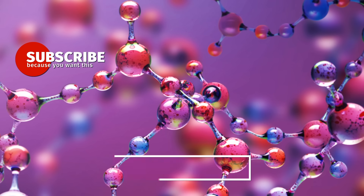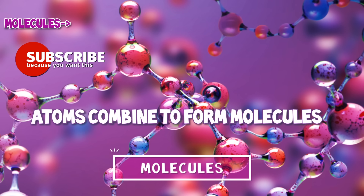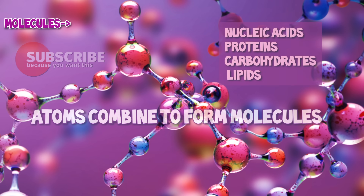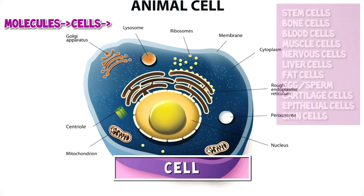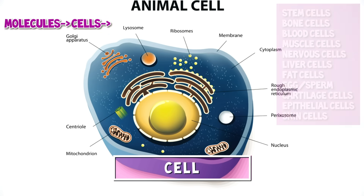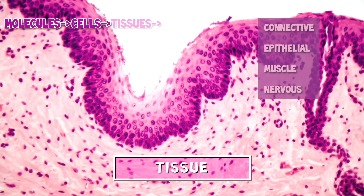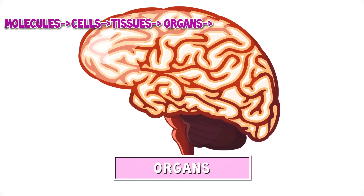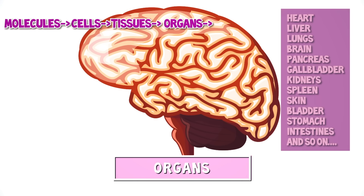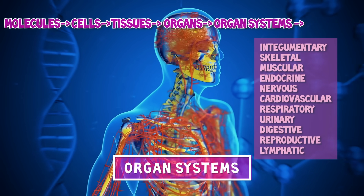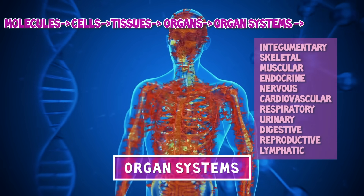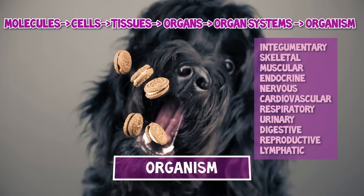The levels of structural organization go from smallest to largest. We start with chemical — atoms will form into molecules. Next level is cellular; the cells are created by those molecules. Next level is tissue, which consists of similar types of cells working together. Then we have organ, which is made up of different types of tissues. Then an organ system, which is a collection of organs working together. And then we have our organism.